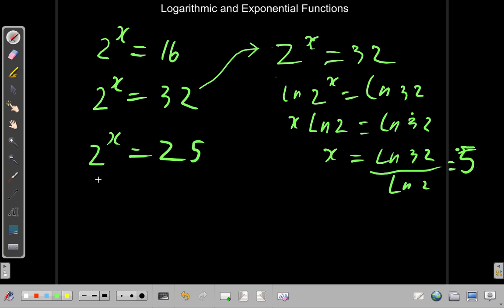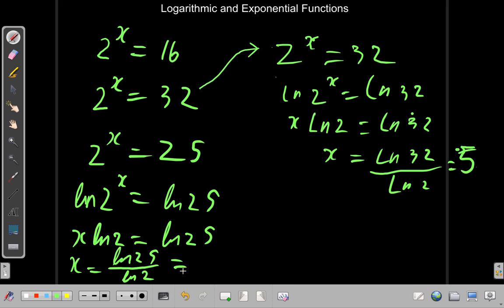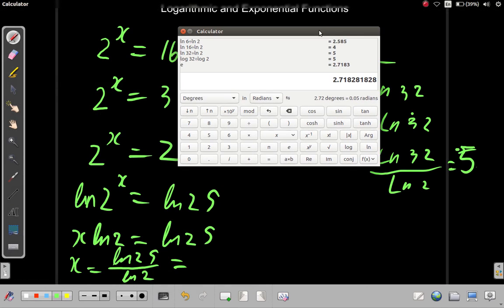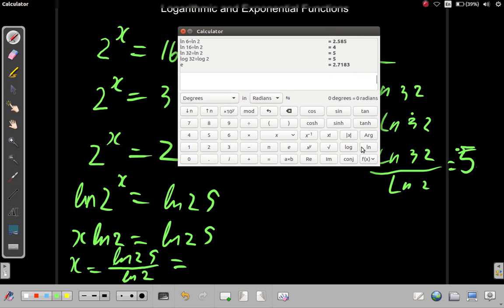Because, what you have here is, let's use ln, ln 2 to the x equal to ln 25. So, this is the same as x ln 2 equals ln 25. When you divide both sides by ln 2, you'll get x equals ln 25 over ln 2. What does that give you?